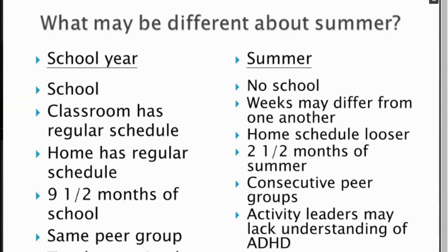Weeks may differ from one another, you might have a looser home schedule, one week might be different from another, family members may be taking more time off. In a lot of communities it's common to take a week of one camp and a week of another camp, so children are sometimes rotating and changing peer groups — very different from school.